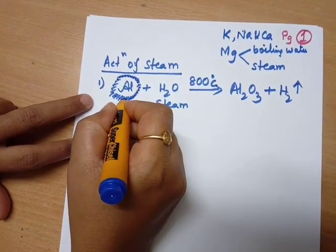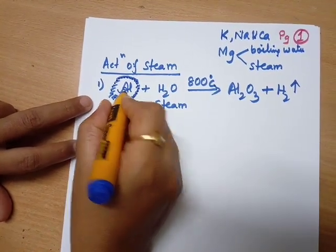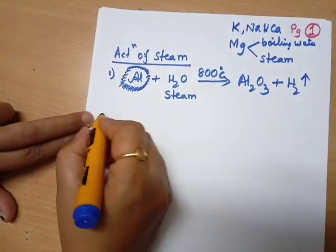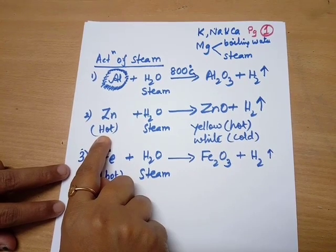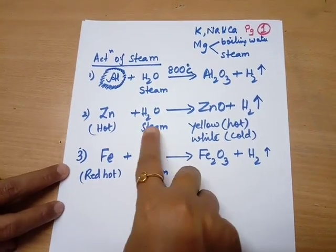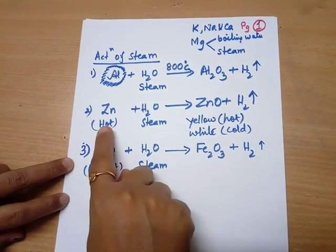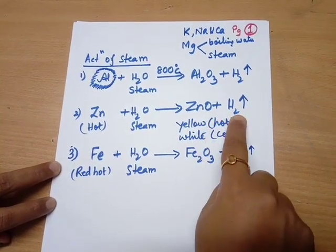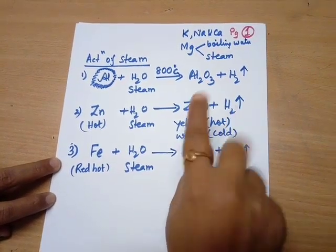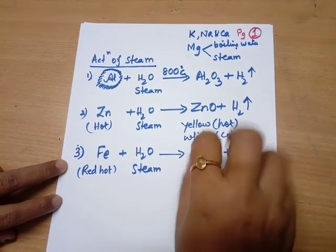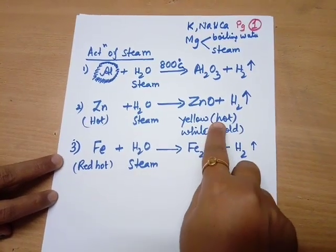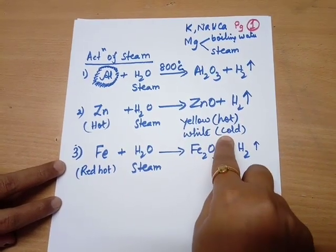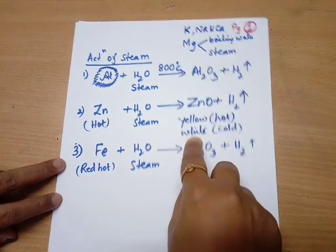But if we maintain the temperature around 800 degrees centigrade, the white coating can be broken off and aluminium continues to react with steam, producing hydrogen gas. When steam is passed through hot zinc, it forms zinc oxide and hydrogen gas. Zinc oxide is yellow when hot and white when cold.